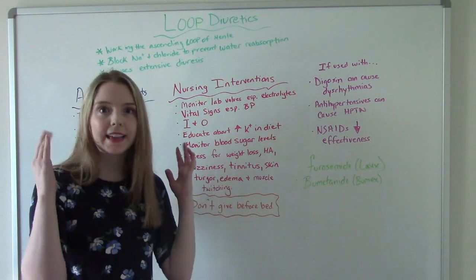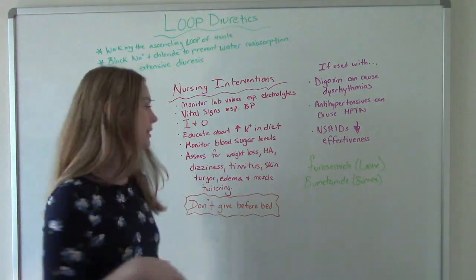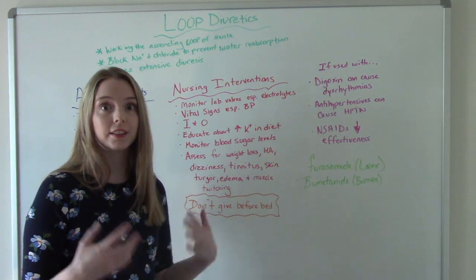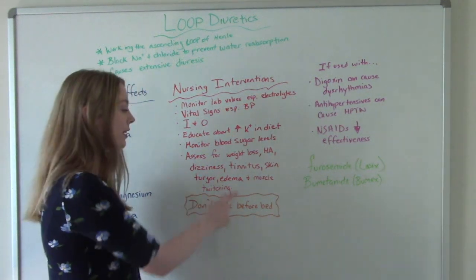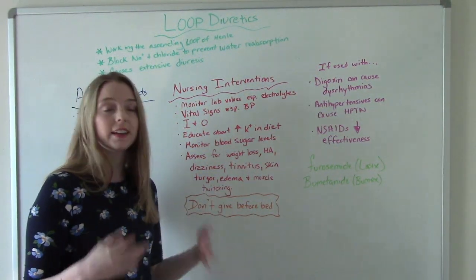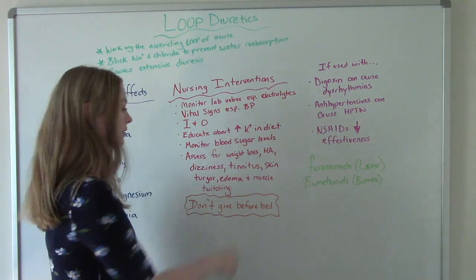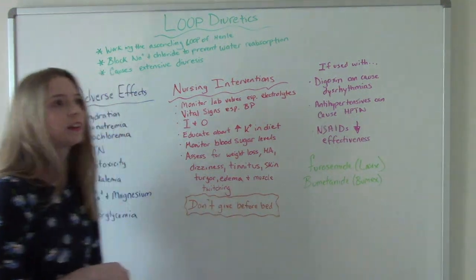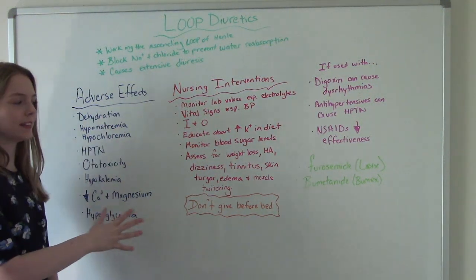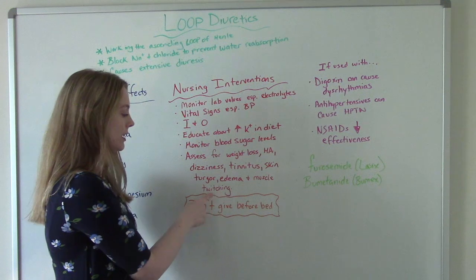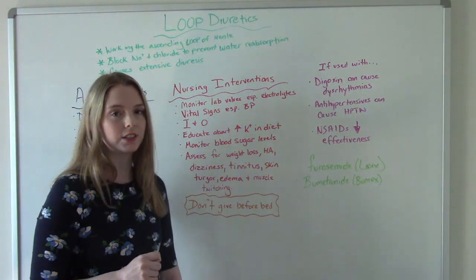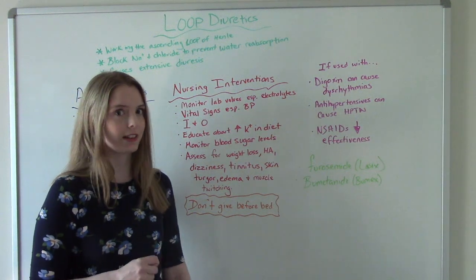Ask about any dizziness or lightheadedness. Assess for tinnitus — that ringing in the ears — which indicates ototoxicity. Check skin turgor to assess for dehydration. Assess for edema, meaning swelling anywhere in the body — feet, hands, or face. Also check for muscle twitching, because if electrolyte imbalances get too severe, it can cause serious CNS-like symptoms, including twitches and tremors, and that's bad.